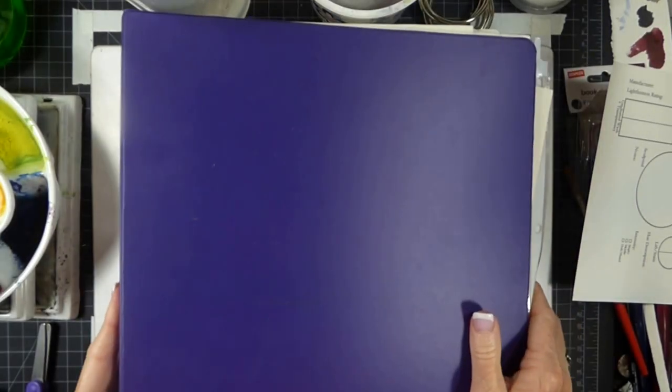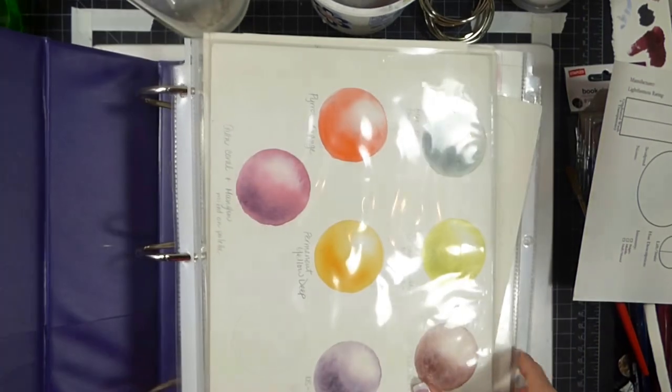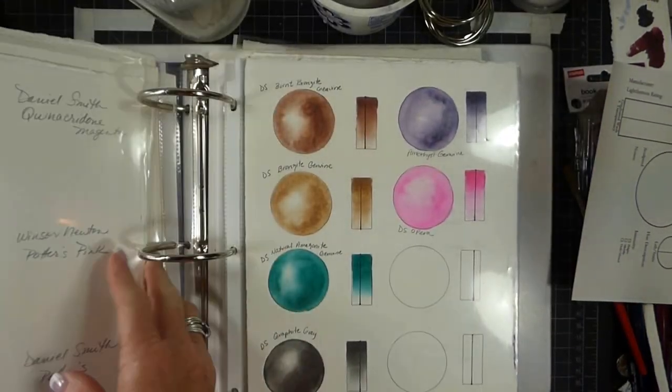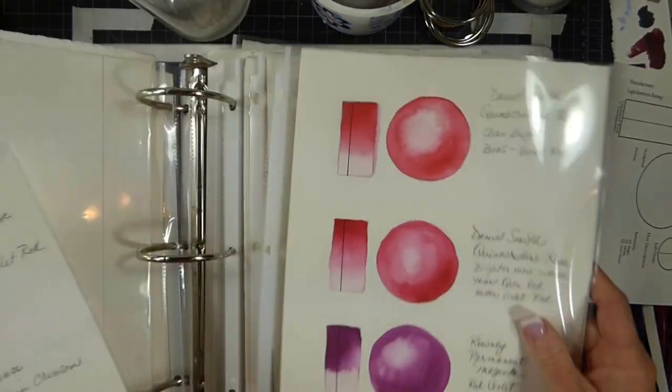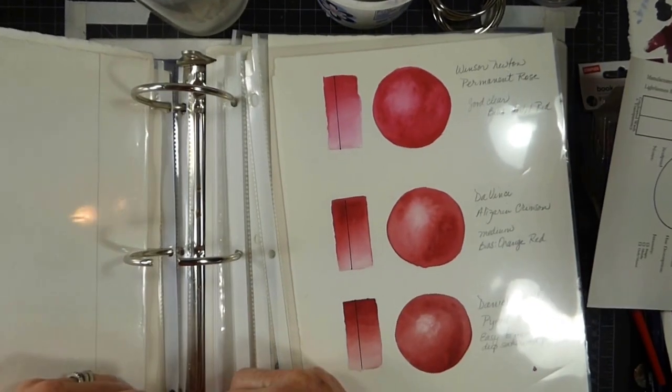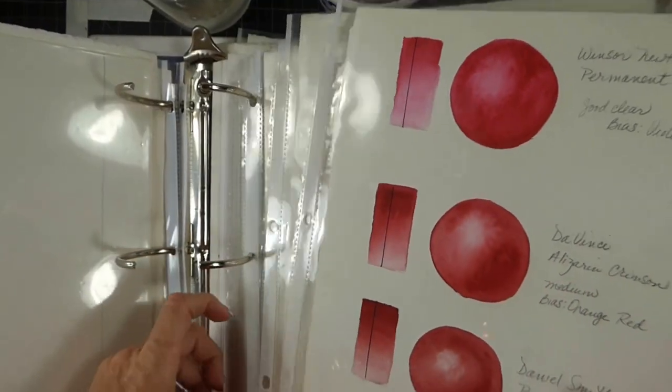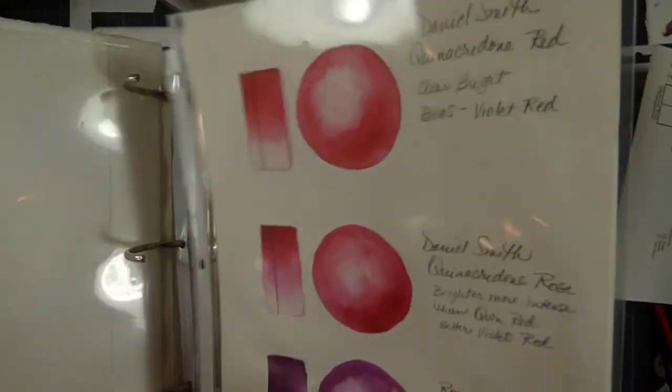I actually have a very big binder here that all of my swatches have gone in, so you can see that my library is quite extensive. Every time I get a new color I'm able to just open these up and place them in, and you can organize them in whatever way you want.